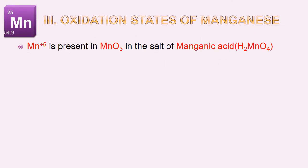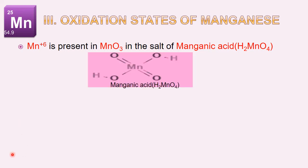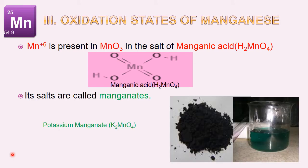The +6 oxidation state of manganese exists in manganese trioxide, which is a salt of manganic acid. The salts of manganic acid are called manganates — for example, potassium manganate.